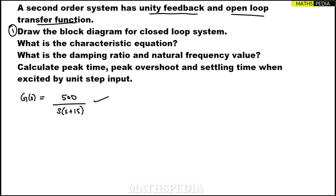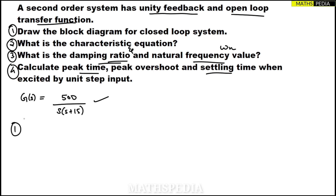The first part of the question is to draw the block diagram for the closed loop system. The second part is to find the characteristic equation. The third part is to find the damping ratio zeta and natural frequency omega n. The fourth part is to find peak overshoot, peak time, and settling time when excited by a unit step input.